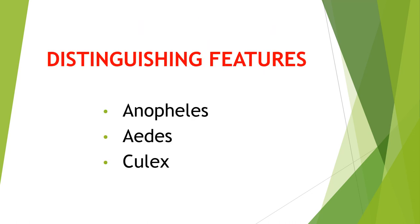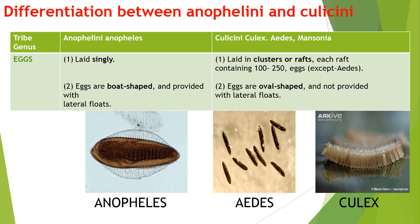In practical exams, you have to distinguish between three genera: Anopheles, Aedes, and Culex. We will see the difference between Anopheline and Culicine. Family Anophelinae contains only one genus, that is Anopheles, while family Culicinae contains three genera: Culex, Aedes, and Mansonia. The difference between the eggs of Anophelines and Culicines: in the case of Anopheles, eggs are laid singly, while in the case of Culicine, the eggs are laid in clusters or rafts, each raft containing 100 to 250 eggs — the exception being Aedes, where eggs are laid singly.